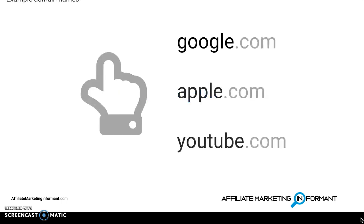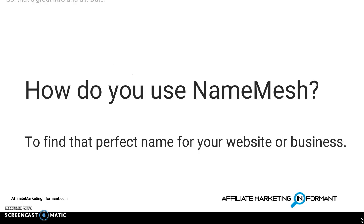Some popular website domain names you likely know are Google.com, Apple.com, and YouTube.com. So this is where NameMesh comes in. You use NameMesh to find that perfect name for your website and business. You use it to find ideas you wouldn't have otherwise thought about.